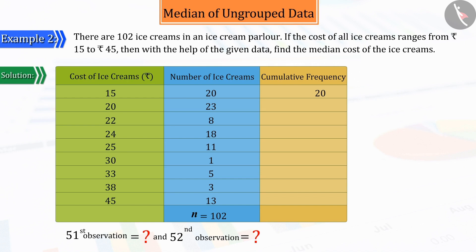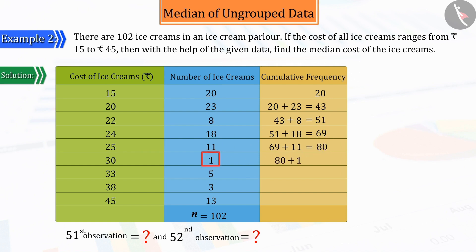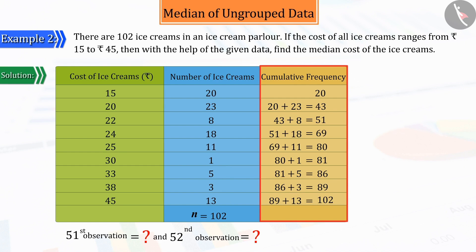They are 20 in number. Similarly, in the second line, let's group the ice creams that are priced up to 20 rupees. Their total number is 43, because in this, the 20 ice creams priced up to 15 rupees are also included. Thus, a new column is formed in which the last row consists of 102 ice creams priced up to 45 rupees. This column is known as the cumulative frequency column.